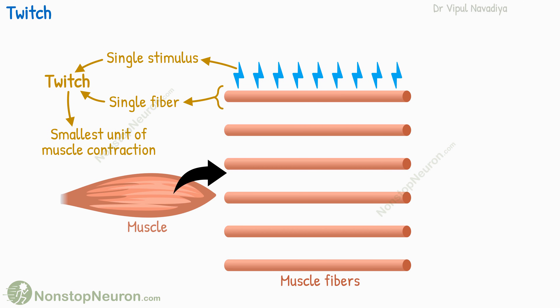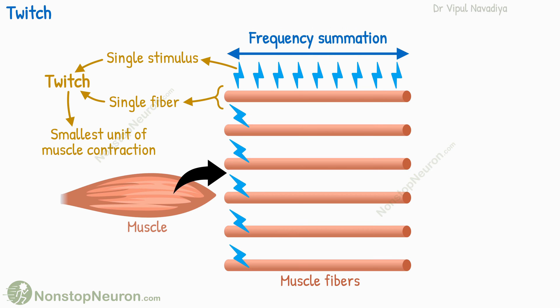One is stimulating the same muscle fiber at a higher frequency, so its individual twitches are added together. This is called frequency summation. And second is stimulating multiple muscle fibers simultaneously. This is called multiple fiber summation.